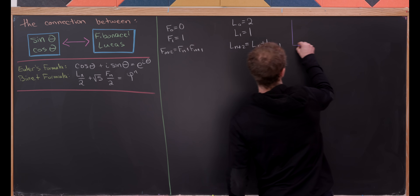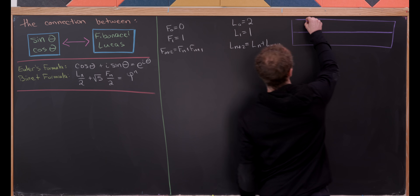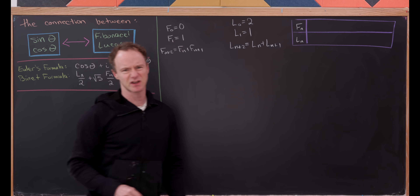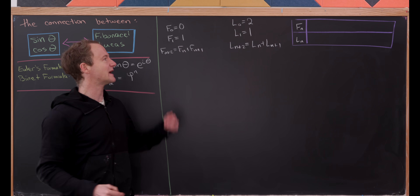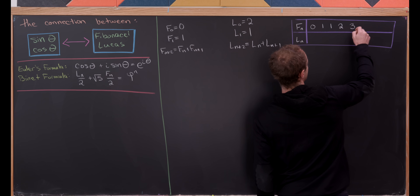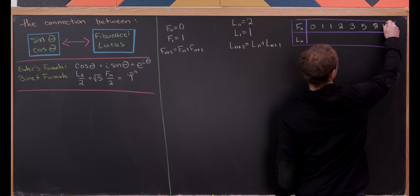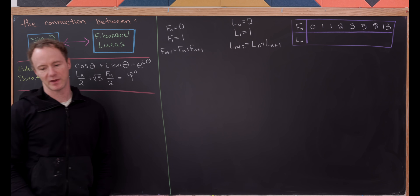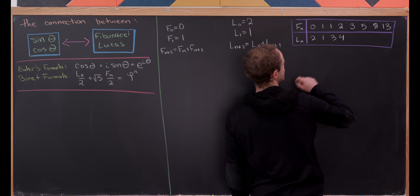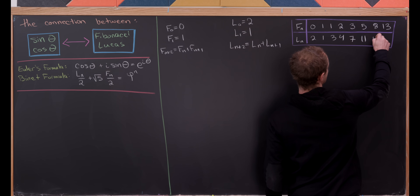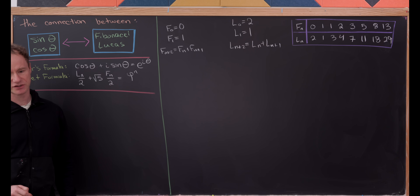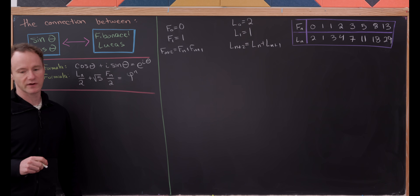Maybe it's a good thing to make a chart to get a feel for how these things grow. Putting Fibonacci numbers on top and Lucas numbers on the bottom: the Fibonacci sequence goes 0, 1, 1, 2, 3, 5, 8, 13. The Lucas sequence goes 2, 1, 3, 4, 7, 11, 18, 29. The Lucas numbers get bigger faster because the seeds are larger, but generally the growth rate is the same.